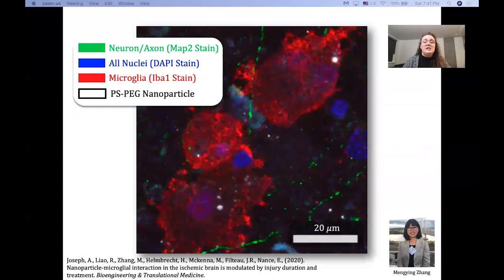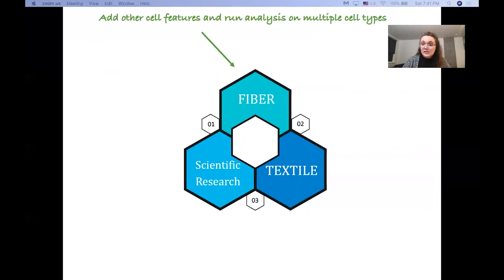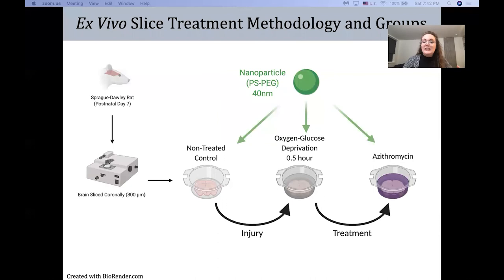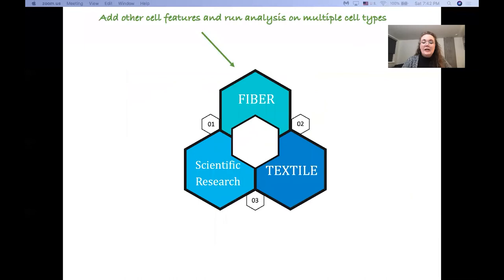That way we can take this complexity and we can add in other cell features and run analysis on multiple cell types since microglia aren't the only cells in the brain and there's so many features we can look at. We can take TEXTILE and build modules that are based on the theory behind the ex vivo slice methodology that informs this experiment. And we can also put all of these things together and support new collaborations.